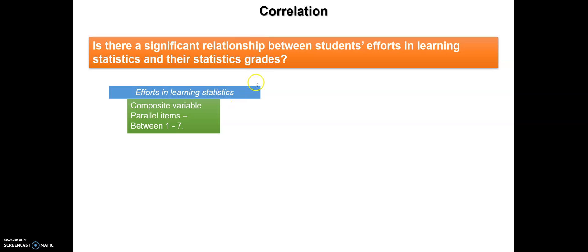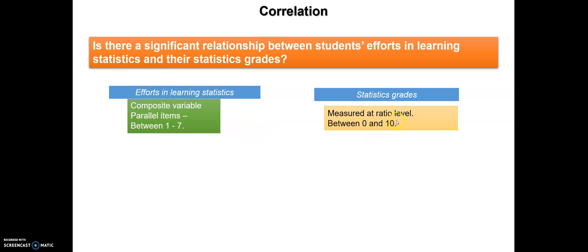Let's go to the hypothesis or research question. Assume that I have a research hypothesis: is there a significant relationship between students' efforts in learning statistics and their statistics grades? In this example, I'm going to test whether there is a significant association between these two variables. The first variable is effort in learning statistics — a composite variable with items taking values between 1 and 7. The second variable is statistics grades, measured at ratio level, taking values between 0 and 10. I'm going to calculate the correlation coefficient to determine if there is a significant relationship.